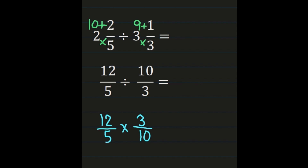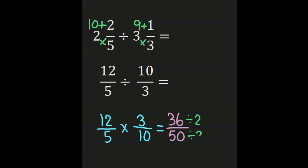Now we're going to follow the steps for multiplying fractions: numerator times numerator and denominator times denominator. So 12 times 3 is 36. And then we're going to multiply denominators: 5 times 10 is 50. Then we need to think about whether we need to simplify. Both of these numbers are even, so they share at least a common factor of 2. We can simplify by dividing our numerator and denominator both by 2.